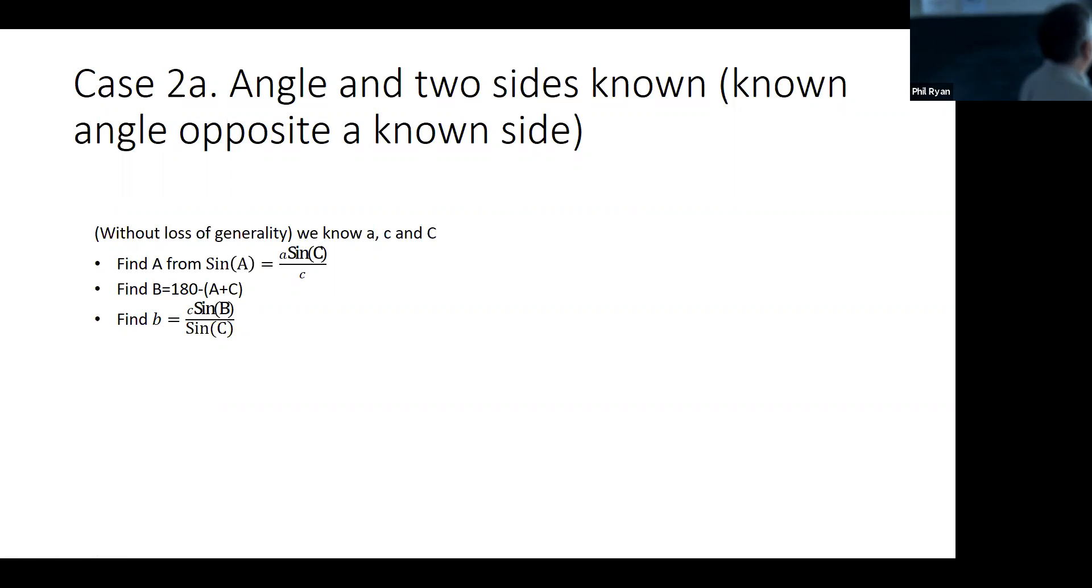Another case would be given an angle and two sides. If we're given an angle and two sides, there's two cases. Either we know a side opposite an angle or we don't. Let's say we know an angle opposite a known side. We know the sides A and C and the angle C. This side is opposite that angle there. We can find the angle A by using the sine law, by multiplying it by the ratio of the sides times sine C. That gives us our second angle. Then we can find our third angle because it has to add up to 180 degrees. Then we can find our third side again by using the sine law.